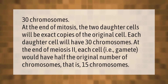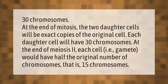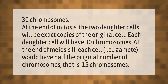Each daughter cell will have 30 chromosomes at the end of meiosis. Each cell — that is, each gamete — would have half the original number of chromosomes, which is 15 chromosomes.